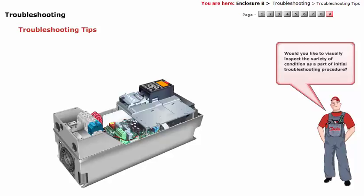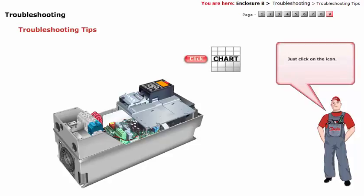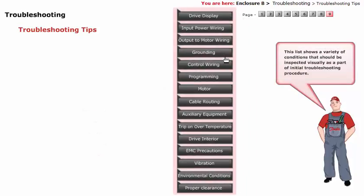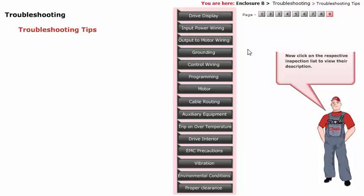Would you like to visually inspect the variety of conditions as part of the initial troubleshooting procedure? Just click on the icon. This list shows a variety of conditions that should be inspected visually as part of the initial troubleshooting procedure. Click on the respective inspection list to view their description. Click the play button to continue.